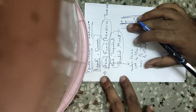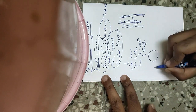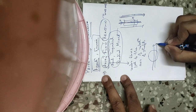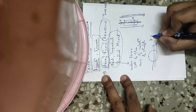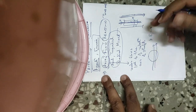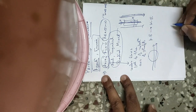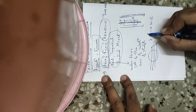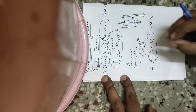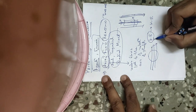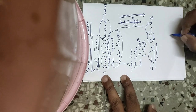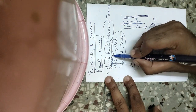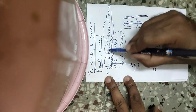A reaction turbine means that as your water flows through the runner, the pressure energy of the water is somewhat converted into kinetic energy. So you have to understand what is axial flow, what is a reaction turbine, and the combination of these two is your propeller and Kaplan turbine.